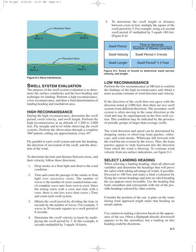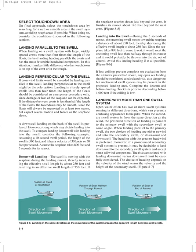When selecting a landing heading, chart all observed variables and determine the headings that will prove the safest while taking advantage of winds if possible. Descend to 100 feet and make a final evaluation by flying the various headings, noting on which heading the sea appears most favorable. Use the heading that looks smoothest and corresponds with one of the possible headings selected by other criteria. Consider the position of the sun, as glare on the water during final approach might make that heading an unsafe option. Use caution when making a decision based on the appearance of the sea, as a flight path directly downswell may appear smoothest but a landing on that heading could be disastrous.